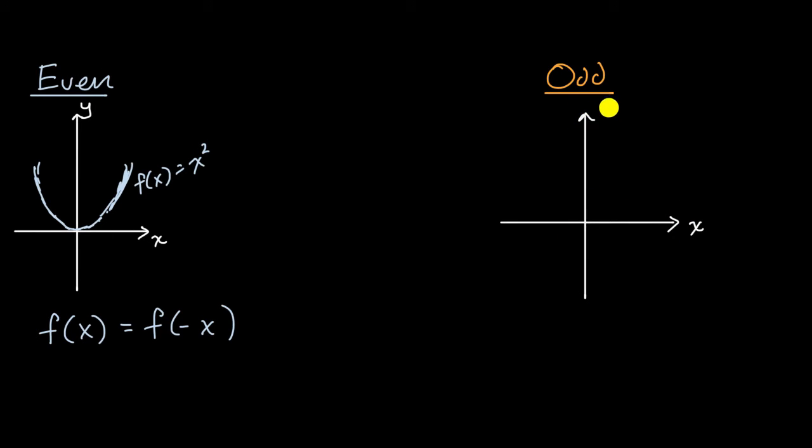Our classic example would be f of x is equal to x to the third. Is equal to x to the third, and it looks something like this. So notice, if you were to flip first over the y-axis, you would get something that looks like this. So I'll do it as a dotted line. If you were to flip just over the y-axis, it would look like this. And then if you were to flip that over the x-axis, well then you're going to get the same function again.